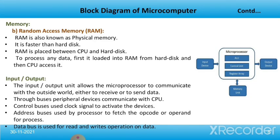The next type is RAM — random access memory. It is the physical memory and is faster than the hard disk. RAM is placed between the CPU and the hard disk. To process any data, it is first loaded into RAM from the hard disk, and then the CPU accesses it.